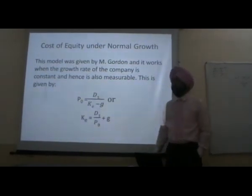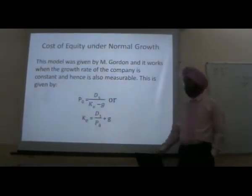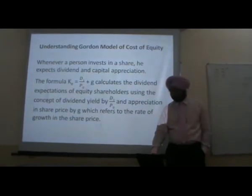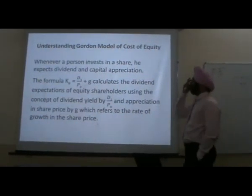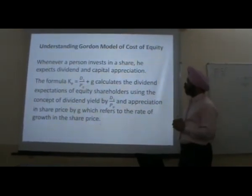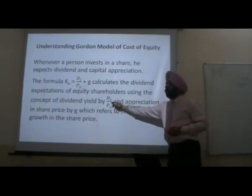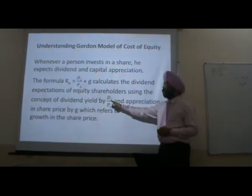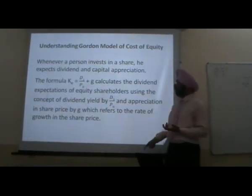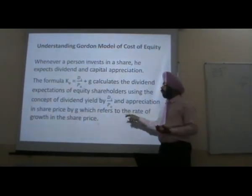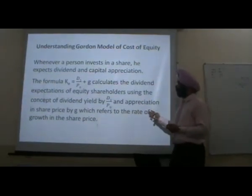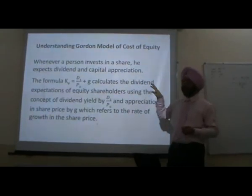The formula Ke = D1/P0 + g calculates the cost of equity using the concept of dividend yield. D1 is the next period's dividend and P0 is the current price. P0 is the base price on which you have the expectation of getting a dividend yield in the next period. The dividend yield component is D1/P0, and G represents the growth and appreciation in share price — the rate at which prices will appreciate in the future. Now you have got a proper understanding of the formula.